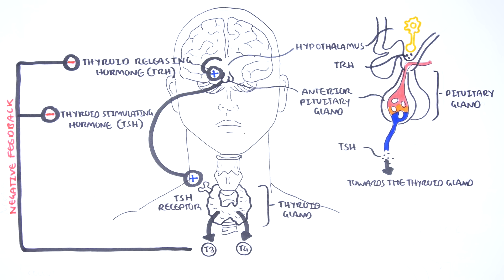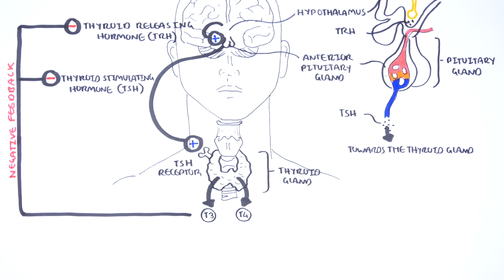In hyperthyroidism, there are elevated circulating thyroid hormones, which means there will be a negative feedback loop causing a decrease in TRH and TSH.